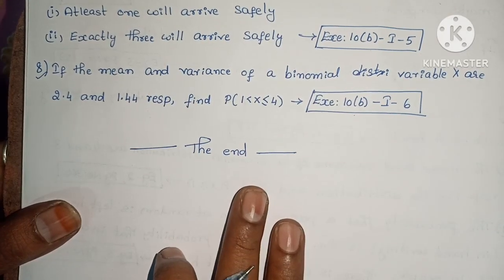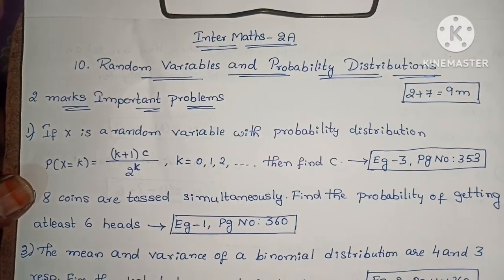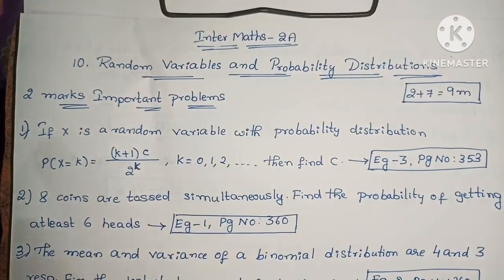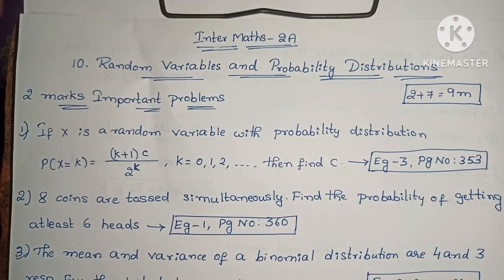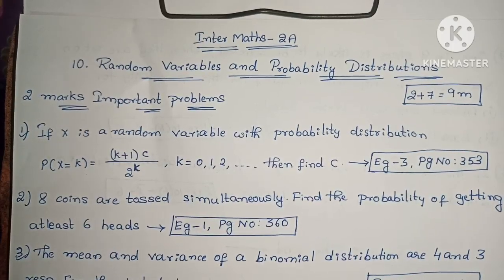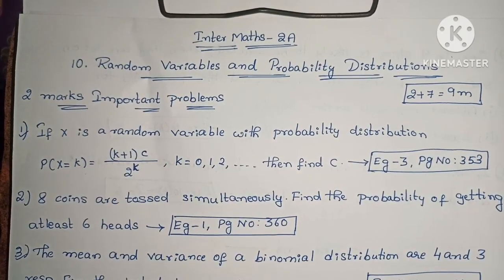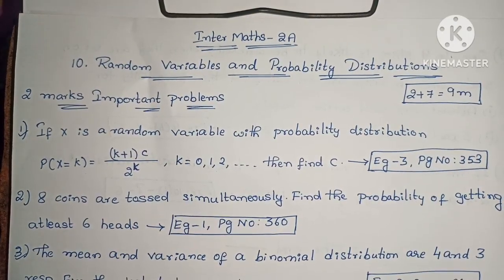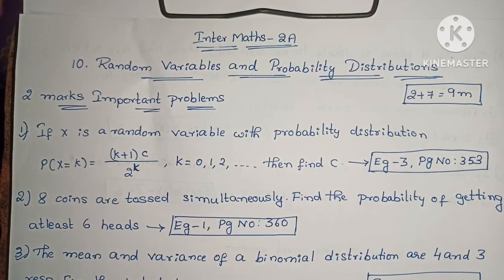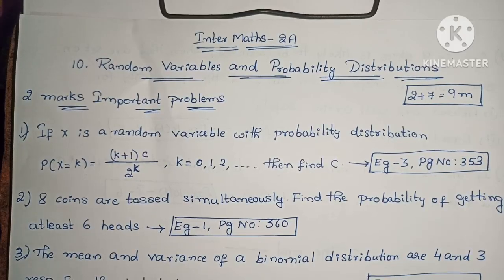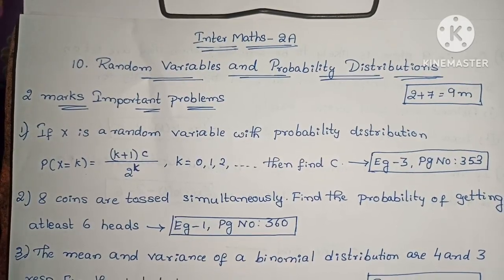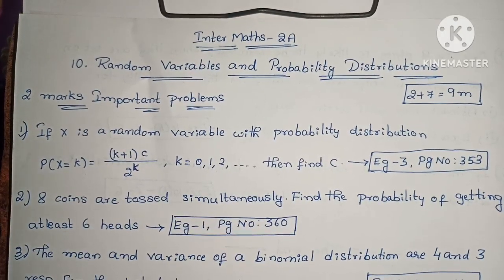Random Variables and Probability Distribution chapter important problems are completed. I will complete the chapter and tell you about the questions already explained. I will also share the link in the description. If you have a comment, please open the description. Thank you.